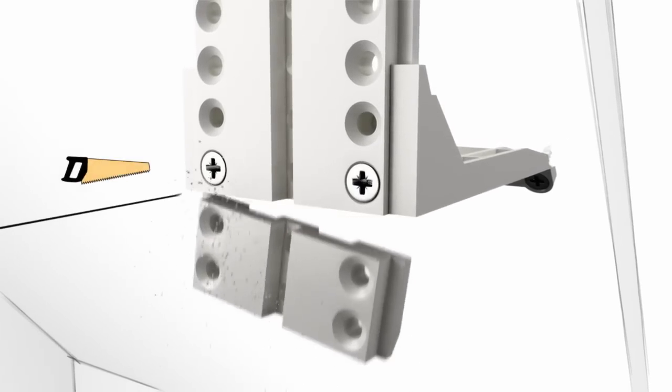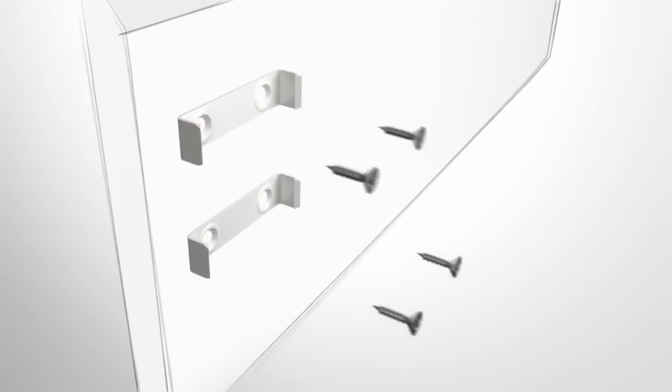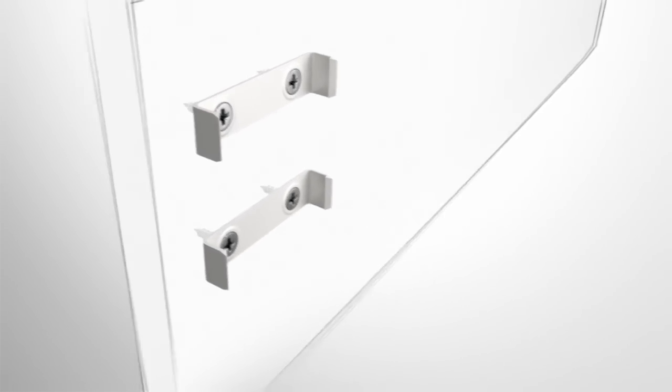Once the adapter has been fixed with screws and the projecting section cut off, a panel can be clipped on and the sliding door fitting installed.